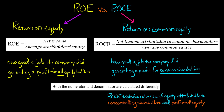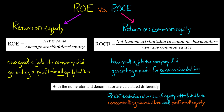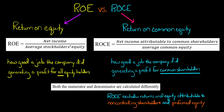In this video, I'm going to show you the difference in calculating return on equity and return on common equity. Return on equity is a company's net income divided by its average stockholder's equity, and it tells you how good a job the company did generating a profit for all of its equity holders — the company's common shareholders, its preferred shareholders, and anyone owning a non-controlling interest in the company's subsidiaries.